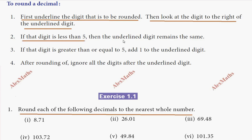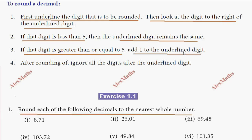If the digit on the right side is less than 5, keep the underlined digit as is. If the digit on the right side is greater than or equal to 5, round up the underlined digit. Then ignore all digits to the right side of the underlined digit.